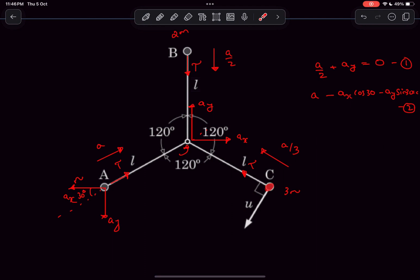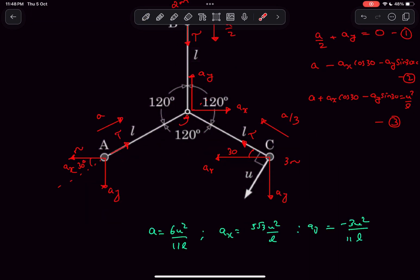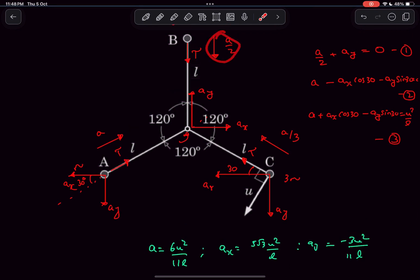Again, reversing and adding the acceleration components, we can say a plus ax·cos(30) minus ay·sin(30) equals u²/l this time, and this would be our equation number 3. Now if you solve these three equations, you'll get the particular value of a, ax, and ay. The acceleration of A is simply going to be a in the ground frame, and a is simply 6u²/11l. B is going to be half of it and C is going to be one-third of it, so option c is the right answer for this question.